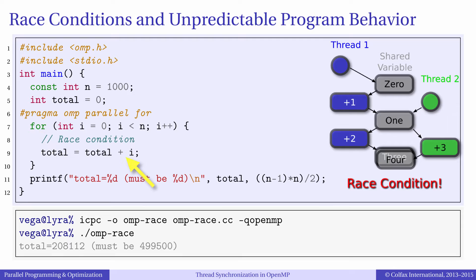In this loop we compute the sum of all integers from 0 to n-1. We run this loop in parallel in multiple threads using the OpenMP functionality pragma omp parallel for.